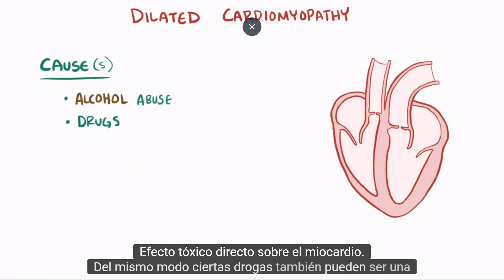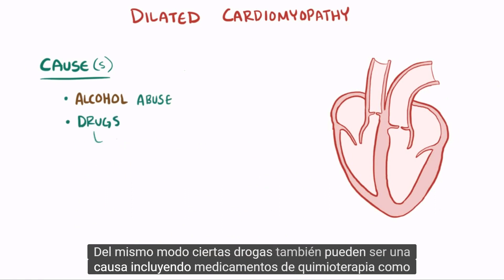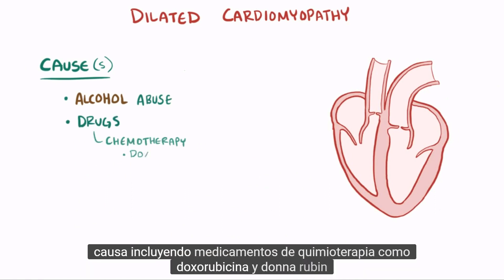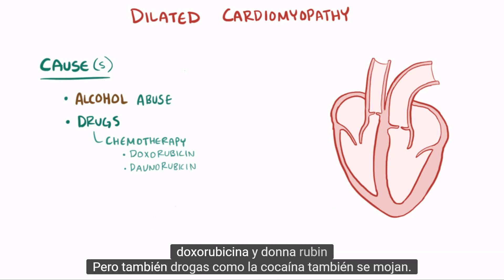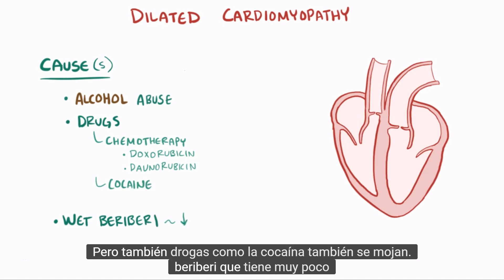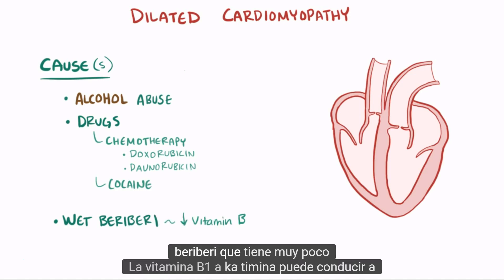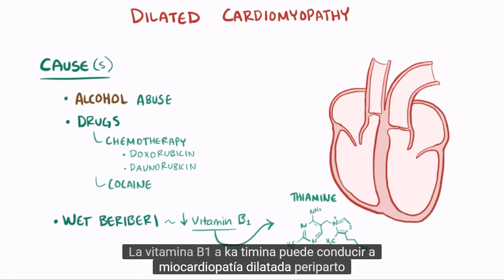Similarly, certain drugs can also be a cause, including chemotherapy drugs like doxorubicin and daunorubicin, but also drugs like cocaine. Also, wet beriberi, which is having too little vitamin B1, also known as thiamine, can lead to dilated cardiomyopathy.